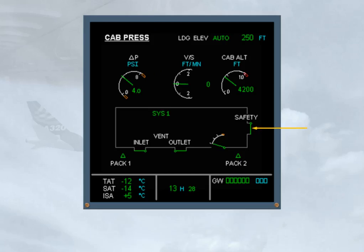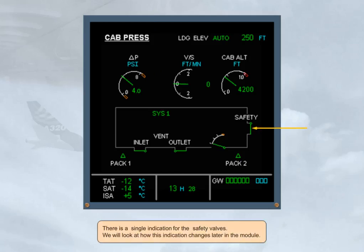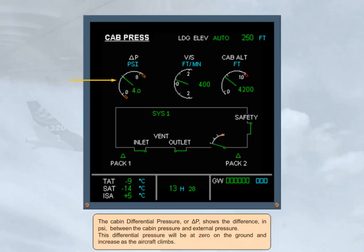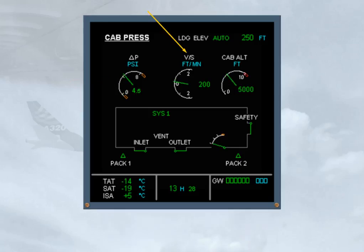We will look at how the safety valve indication changes later in the module. The cabin differential pressure, or delta P, shows the difference in PSI between the cabin pressure and external pressure. This differential pressure will be at zero on the ground and increase as the aircraft climbs. The cabin vertical speed shows the rate of change, in feet per minute, of cabin altitude.